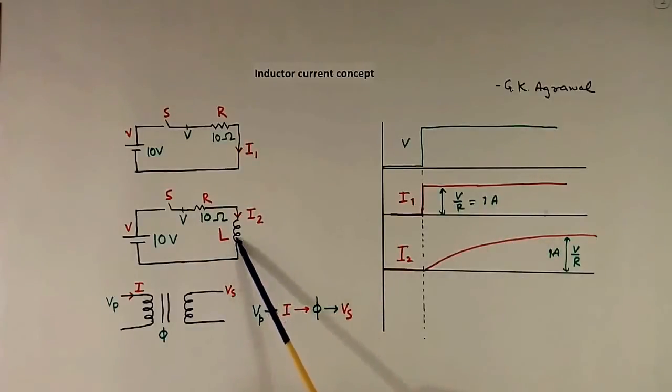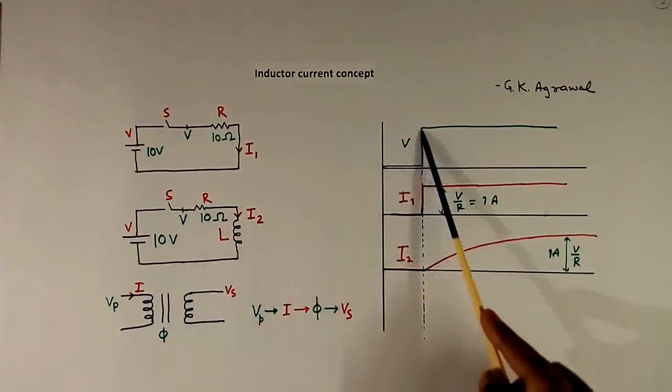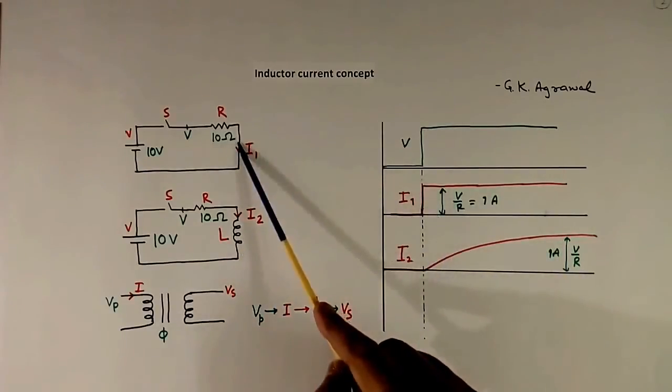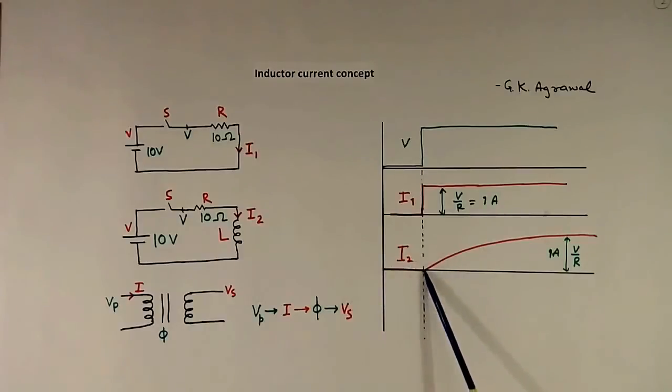But if an inductor is also connected, then because of the inductor, when we close the switch here, current will not flow immediately. Current will rise slowly, and after some time it will reach its full value equal to V by R.